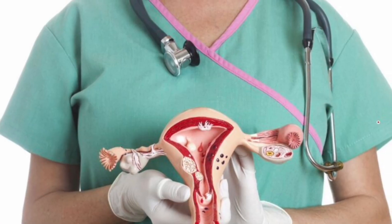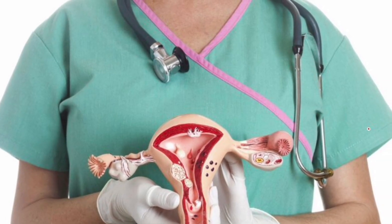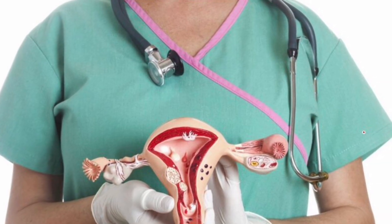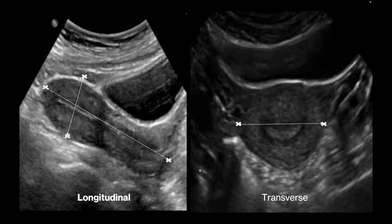Uterine size varies depending upon the patient's age, menstrual status, and gravida. This is the mid-sagittal view of the uterus and this is the transverse view of the uterus. We take length and height in the mid-sagittal image, while we take width in the transverse view.